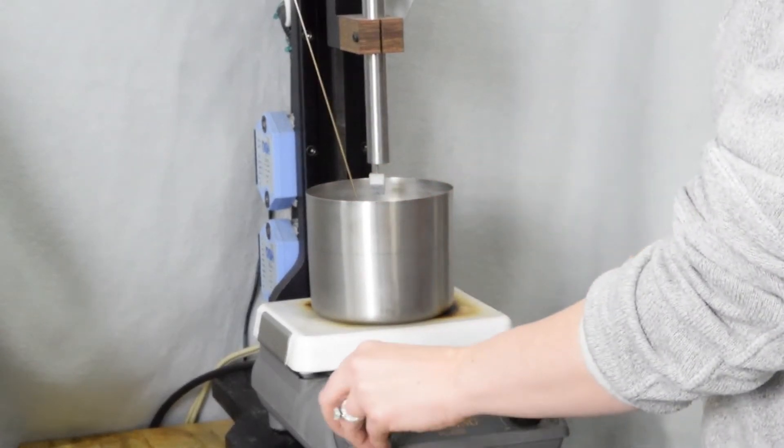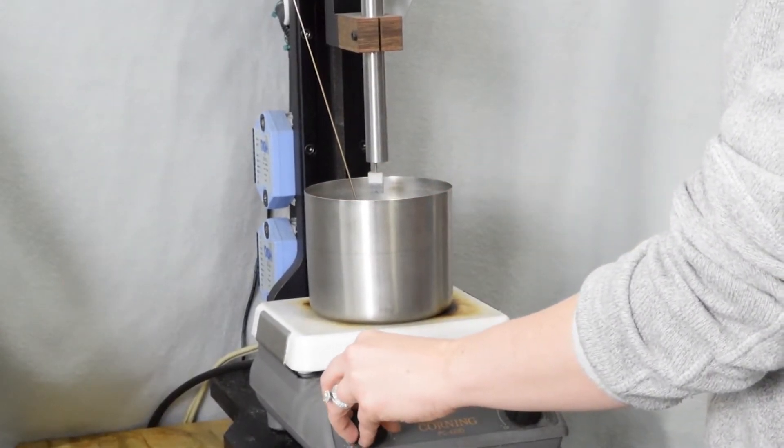Once the wire is set in the mandrel, you place it at the bottom of your container and cover it with denatured alcohol.